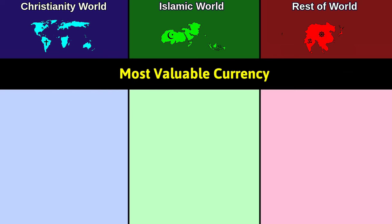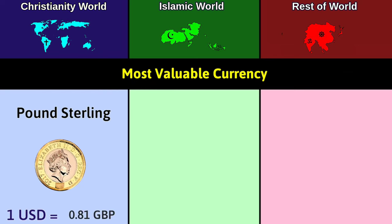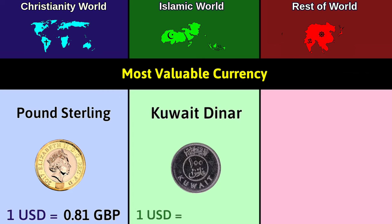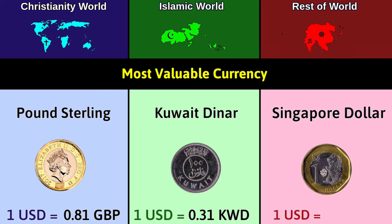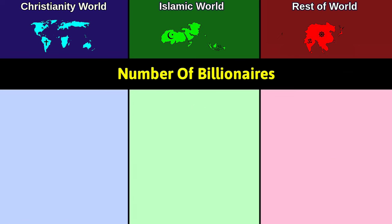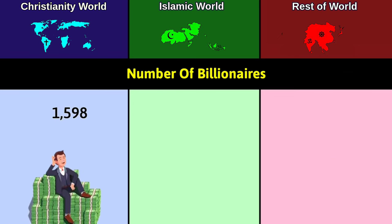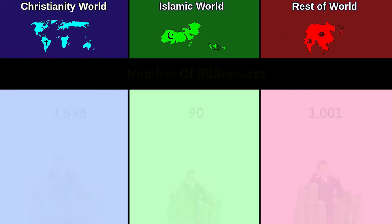Most valued currency: Christianity — Pound Sterling, 1 dollar equals 0.81 pounds; Islam — Kuwaiti Dinar, 1 dollar equals 0.31 dinar; Rest — Singapore Dollar, 1 dollar equals 1.39 Singapore dollars. Number of billionaires: Christianity world 1,598; Islamic world 90; Rest 1,001.